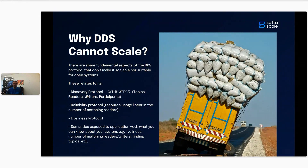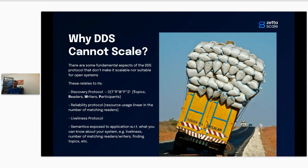There are some fundamental aspects of DDS protocols that make it not really scalable or not suitable for open systems. The first one is the discovery protocol. In DDS, all participants need to discover each other to establish peer-to-peer connectivity. This peer-to-peer communication occurs first via UDP multicast when available for discovery, but also for publication of messages to several participants at the same time, while they still need point-to-point communication using UDP Unicast.